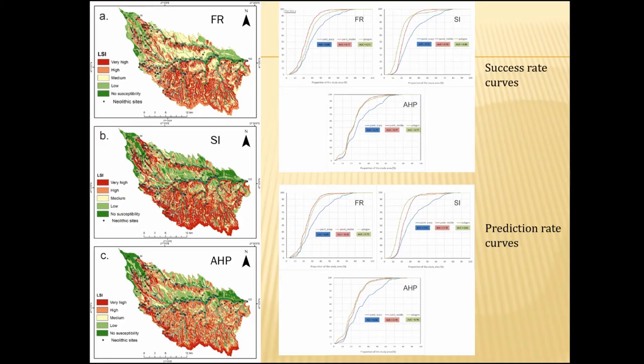These are the final landslide susceptibility maps produced with frequency ratio, statistical index, and analytic hierarchy process, along with the success rate curves and prediction rate curves. We obtained very good results using these three methods, and as mentioned, the statistical index proved the best validation.